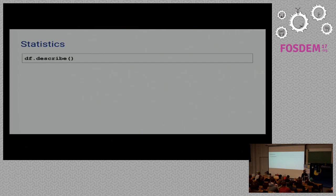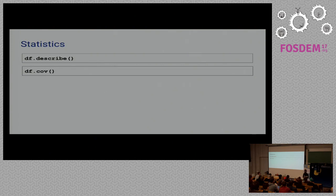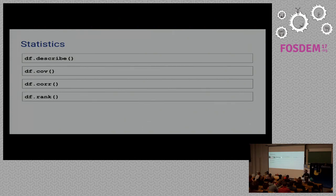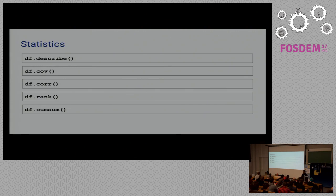The describe method is useful for getting a quick glance at your data. There's also a method for finding the covariance between different columns or aspects of your data, as well as a method for finding correlation easily. Additionally, there are methods for finding the rank of a value within a column, and another for finding the cumulative sum of all values in a column.